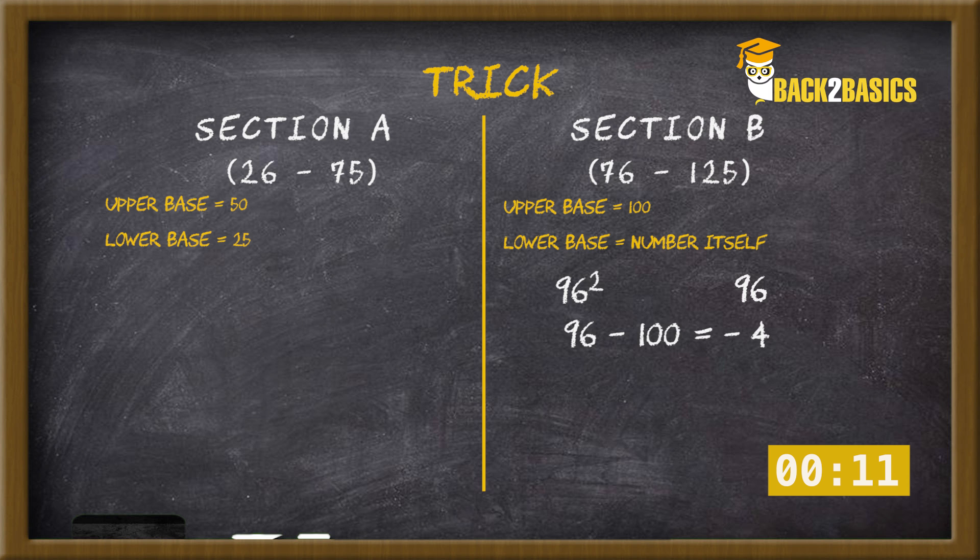Step 3, subtract 4 from 96 that is 92. And for the last two digits, write the square of 4. So the answer is 9216.